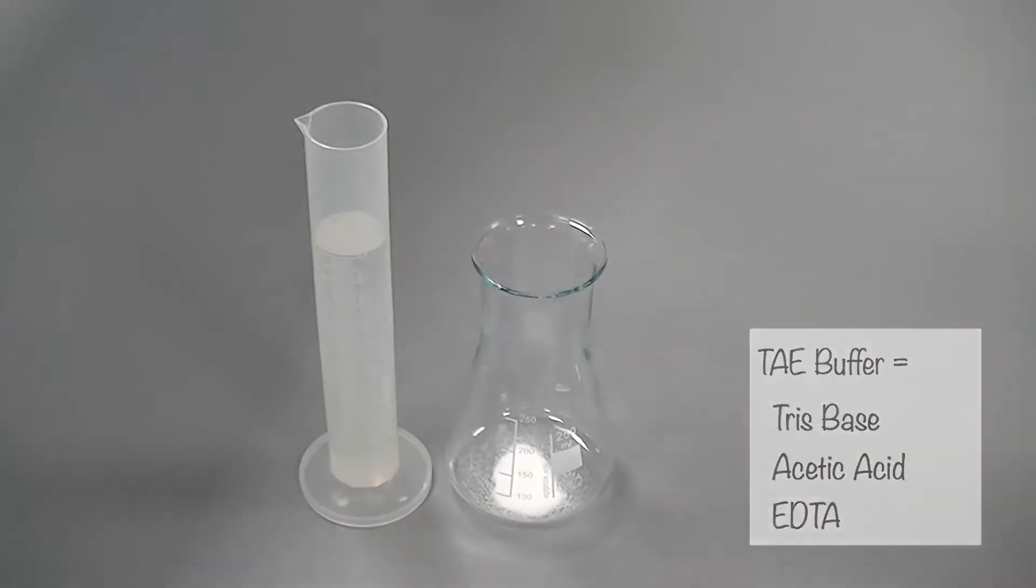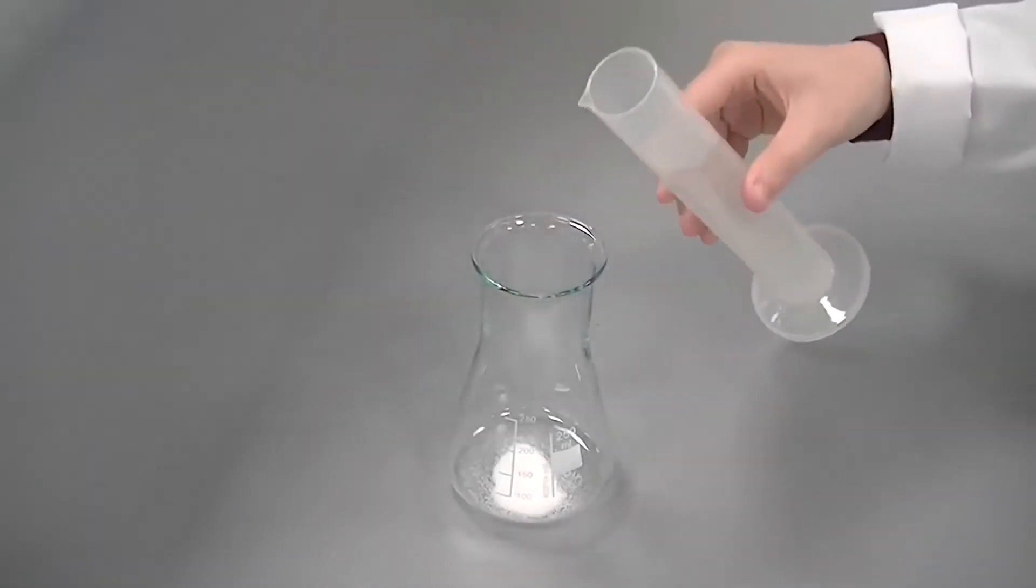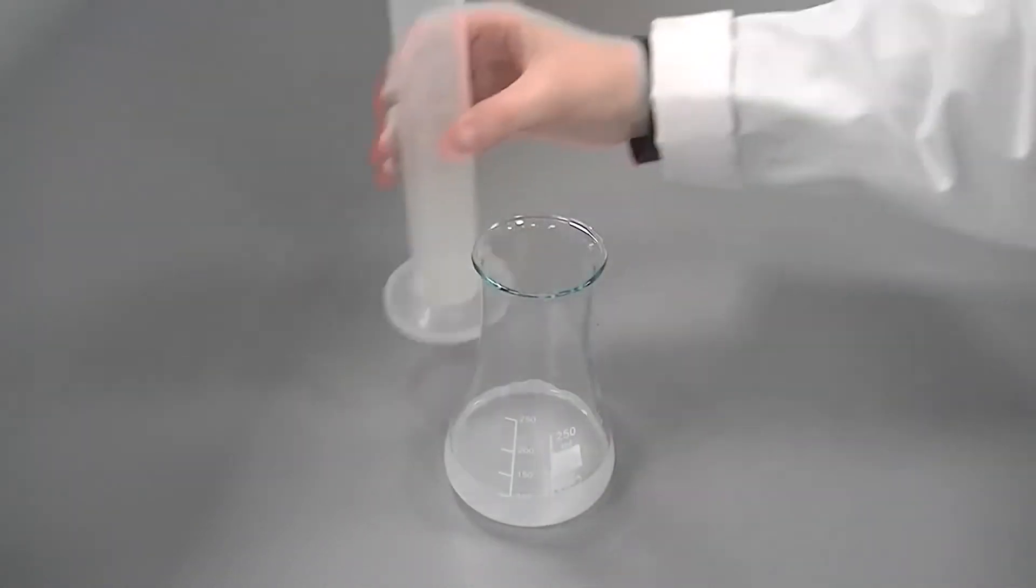In this video, we are adding 100ml of TAE buffer to 1g of agarose powder to make our 1% gel.